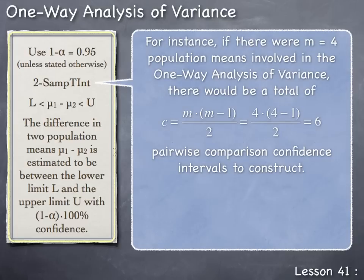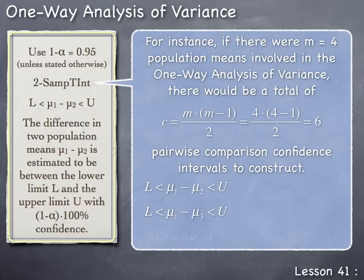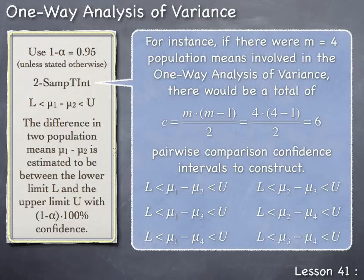The Two-Sample T-Interval command can be used to construct all C = m(m − 1)/2 pairwise comparison confidence intervals for the m population means. For instance, if there were m = 4 population means, there would be C = 4 × 3 / 2 = 6 pairwise comparison confidence intervals to construct. These six intervals compare μ₁ to μ₂, μ₁ to μ₃, μ₁ to μ₄, μ₂ to μ₃, μ₂ to μ₄, and μ₃ to μ₄ — all pairs needed to determine which population means differ from each other.